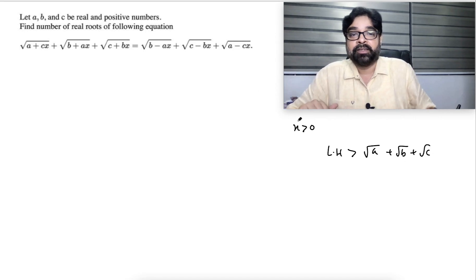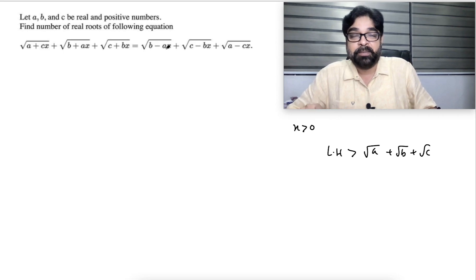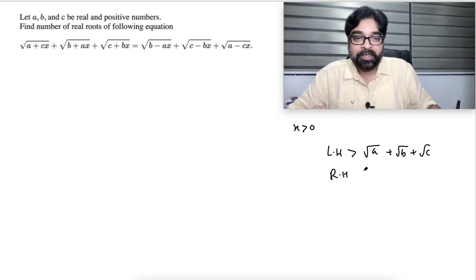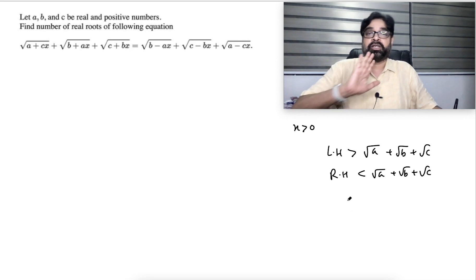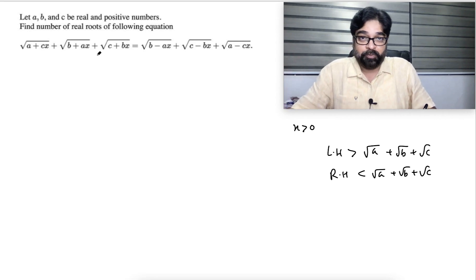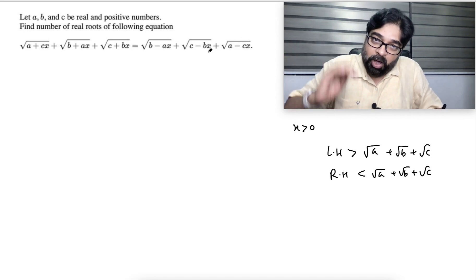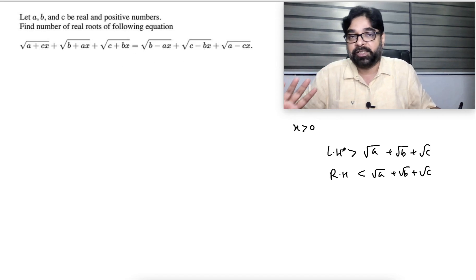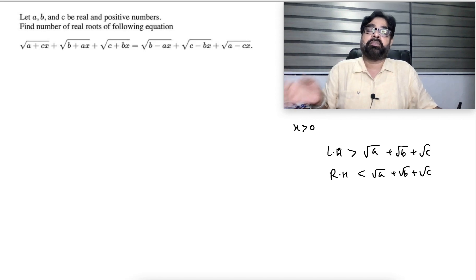Now the right-hand side — think: x greater than 0, A positive, x positive, so it is a positive number. So B minus a positive number will be lesser than √B. This will be lesser than √C. This will be lesser than √A. So the right-hand side is less than √A + √B + √C. Means the left side is bigger than √A + √B + √C and the right side is smaller, so they cannot be equal. So x cannot be greater than 0 — any real value bigger than 0 is impossible.